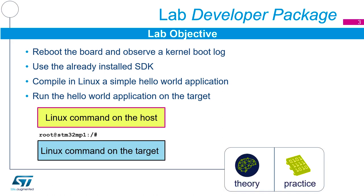As we progress through all these slides, most of the time we'll have a terminal window open connected to our target board and a terminal window open for commands running on our host. We've color-coded these commands: anything you're typing on your host terminal window will be in the yellow colored box with a red border, and any commands typed directly to your target board will be in the blue colored box with the black border.